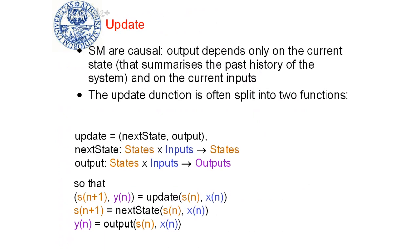This is the definition of so-called Mealy machines. We'll go back to this classification later. For all the machines in which the output does not depend on the inputs and is only a function defined over the states, these machines will be called Moore machines.